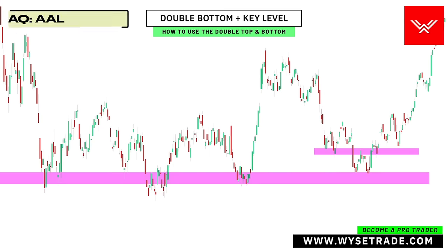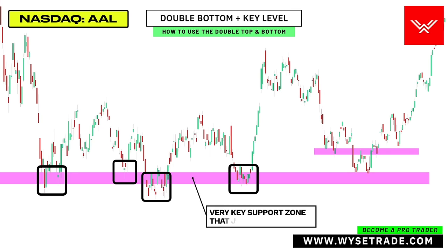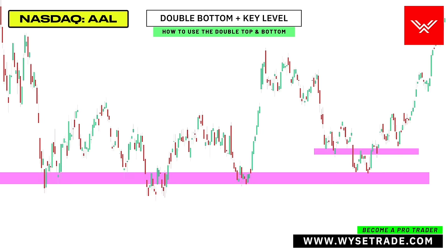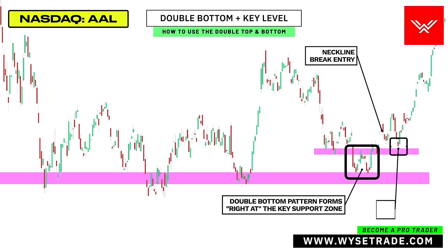This is the American Airlines stock again. All these reversal points give you a very key support zone that is also a swing low. Price comes down and creates the double bottom pattern right at the very key level. You can take your entry at the break of neckline or through the pullback here.